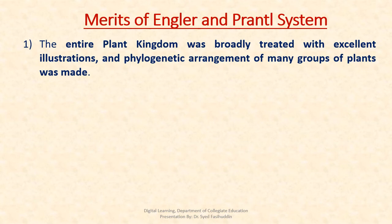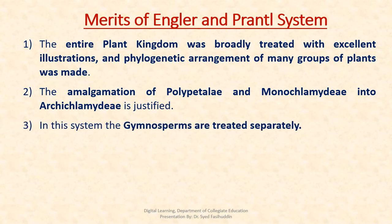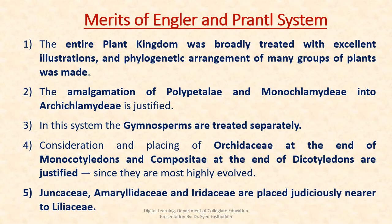Merits of the Engler and Prantl system: The entire plant kingdom was broadly treated with excellent illustrations and phylogenetic arrangements of many groups of plants. The amalgamation of Polypetalae and Monochlamydeae into a separate group called Archichlamydeae can be justified. In this system, the Gymnosperms are treated separately. The placement of Orchidaceae at the end of Monocotyledoneae, and Compositae at the end of Dicotyledoneae, is justified since they are considered highly evolved plant groups. Juncaceae, Amaryllidaceae, and Iridaceae are placed nearer to Liliaceae, which is also justified.